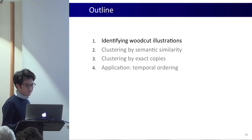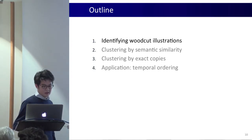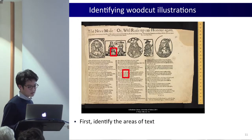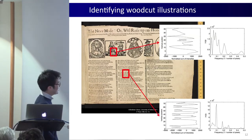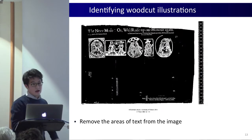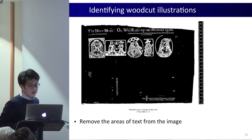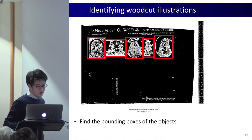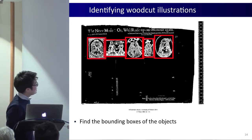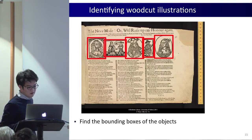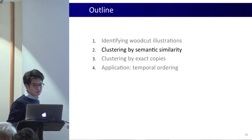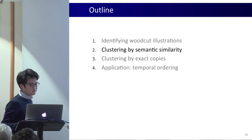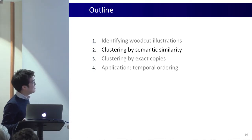First, we identify the woodcut illustrations by eliminating regions of text, which obviously don't contain illustrations because they have regular patterns. Having removed areas of text from the photograph, we identify the boundaries of the remaining objects automatically. Then, having identified all the illustrations, we cluster them by semantic similarity.